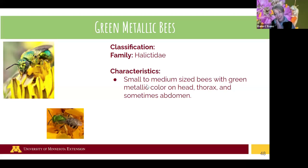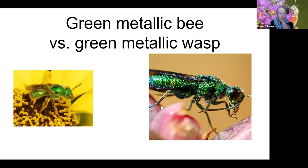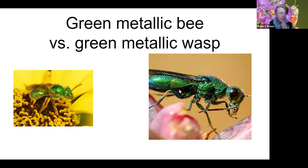Green metallic bees are an easier group to identify — they're a type of sweat bee in the family Halictidae. These are medium-to-small bees with bright green metallic coloring on their head and thorax, and sometimes also the abdomen. Watch out for green metallic wasps, which can look similar — but looking closely you can see a very different pitted exoskeleton structure, not fuzzy, and not carrying a bunch of pollen like the green metallic bee.